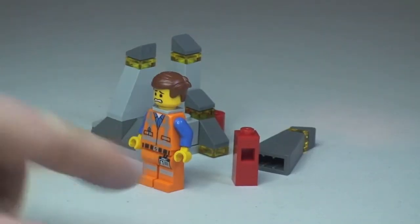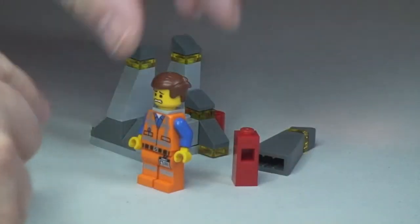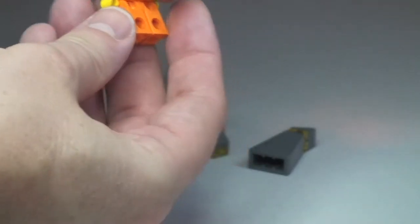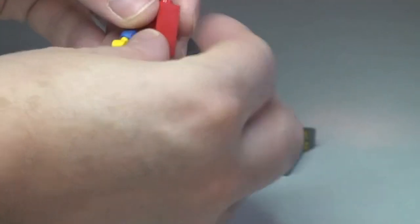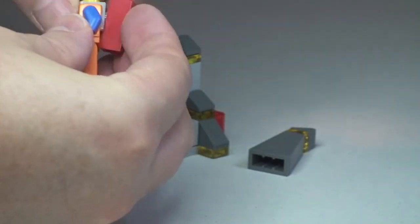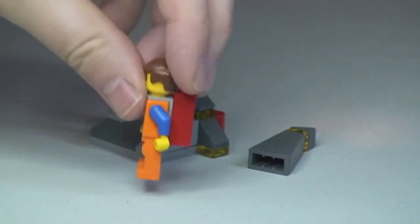Right so there we now have Emmett ready to get the piece of resistance. So like I said that just simply fits onto his back. Like that.